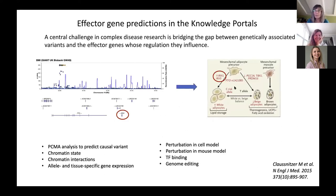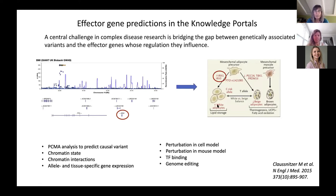They actually worked out the mechanism in detail. The causal variant in the FTO gene actually disrupts a binding site for a transcriptional repressor. When that repressor can't bind, the expression of IRX3 and IRX5 goes up, it disrupts the balance of white versus beige adipocytes, and it increases lipid storage and adiposity — BMI. This is the kind of knowledge that we all want to get from genetic associations. What we'd like to do in the portal with effector gene lists is to help investigators make this first step from variant to likely effector genes.